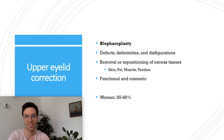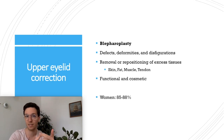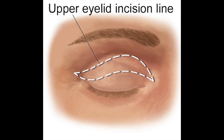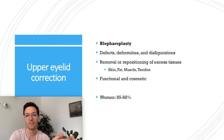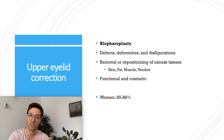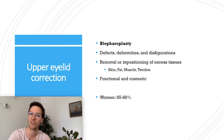An upper eyelid correction is called in medical terms a blepharoplasty. It's done to correct defects, deformities, and even disfigurations of the upper eyelid by the removal or repositioning of excess tissue — mostly fat, muscle, skin, and even tendon. It can have some functional indications as well as cosmetic reasons, and is mostly performed among women. 85 to 88 percent of all procedures is done among women, but the percentage of men choosing for an upper eyelid correction is increasing rapidly each year.